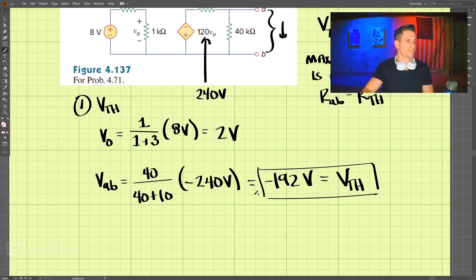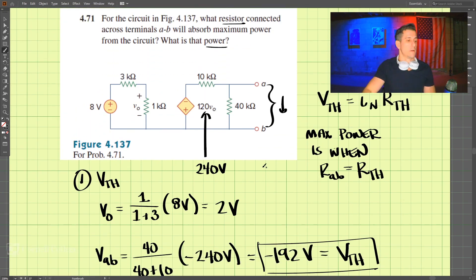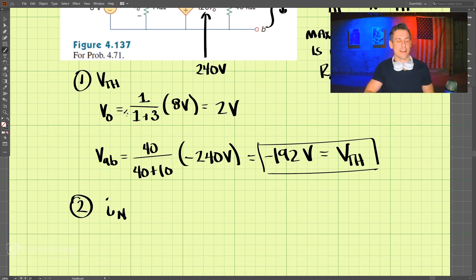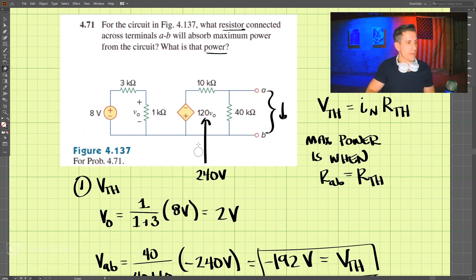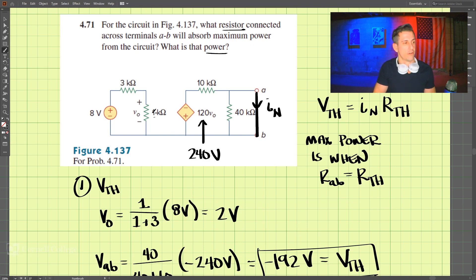For step two, we're going to find the Norton current. To find the Norton current, we short between terminals a and b — that shorted current is the Norton current. In this configuration, the dependent source is still 240 volts because nothing upstream has changed, but we've shorted a-b.